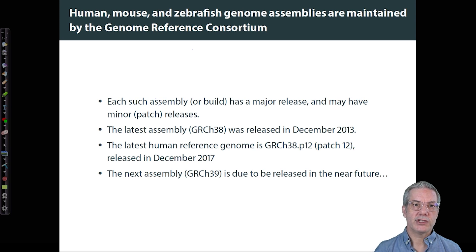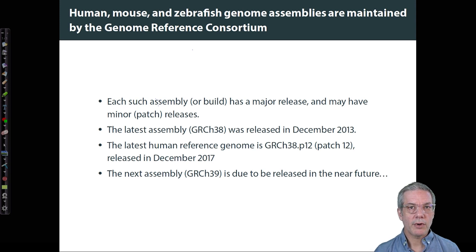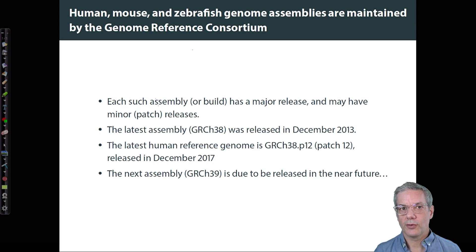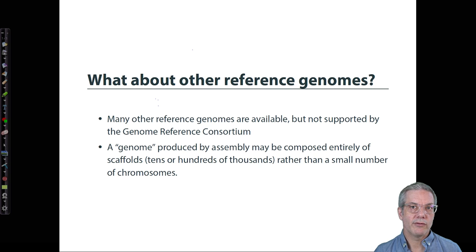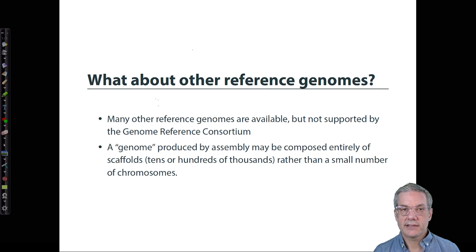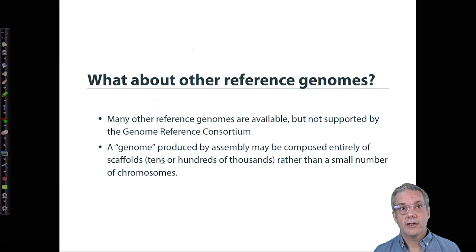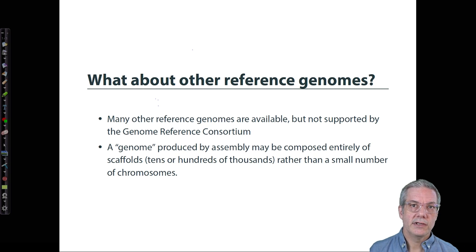These genomes are reference genomes because individuals differ from the reference — none of us has the same sequence as the human reference genome — but the reference serves as a basis for annotation and interpretation. Other assemblies beyond the three maintained by the GRC are still considered reference genomes, but they're just not maintained by the Genome Reference Consortium. They may be assembled by a single center or even a single lab, and this type of assembly may be composed entirely of scaffolds.